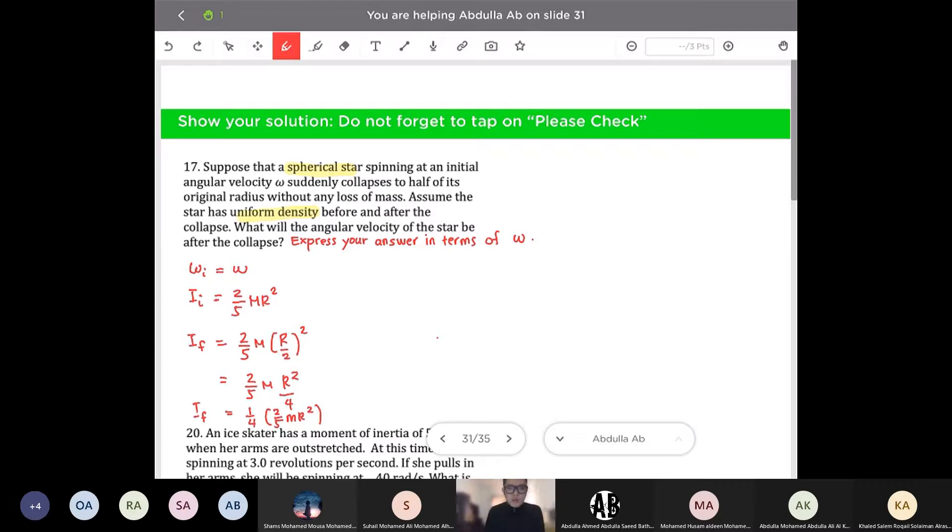And I could rewrite this as i final is equal to 1 fourth 2 over 5 m r squared. Any questions so far? Now take note that 2 over 5 m r squared is in fact equal to i initial. So then I could rewrite this as 1 over 4 i initial. Because again, 2 over 5 m r squared is just my i initial. Then I could say that therefore my i final is equal to i initial over 4.